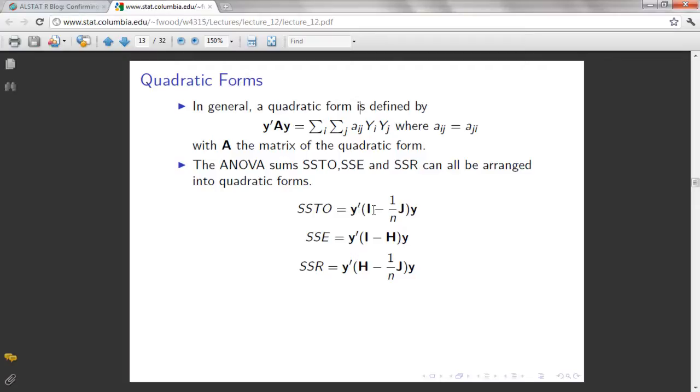So we have here the SST which is Y prime times an identity matrix minus 1 over N times the matrix J which has an n-verse of 1 in rows and columns. And we have the dependent variable Y. And this Y prime is actually the transpose, transpose of the Y.